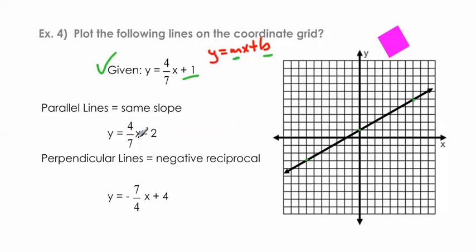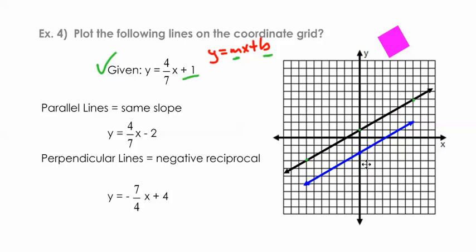Now let's look at y equals 4/7x minus 2. Starting at negative 2 on the y-axis, I plot the slope up 4 over 7, then go down 4 and over 7 in the other direction. Connecting the dots in blue, these two lines look parallel — and I'll prove it by dragging the blue line over to the black one. They're identical. Those two lines are parallel; they will never touch because they have the exact same slope of 4/7.